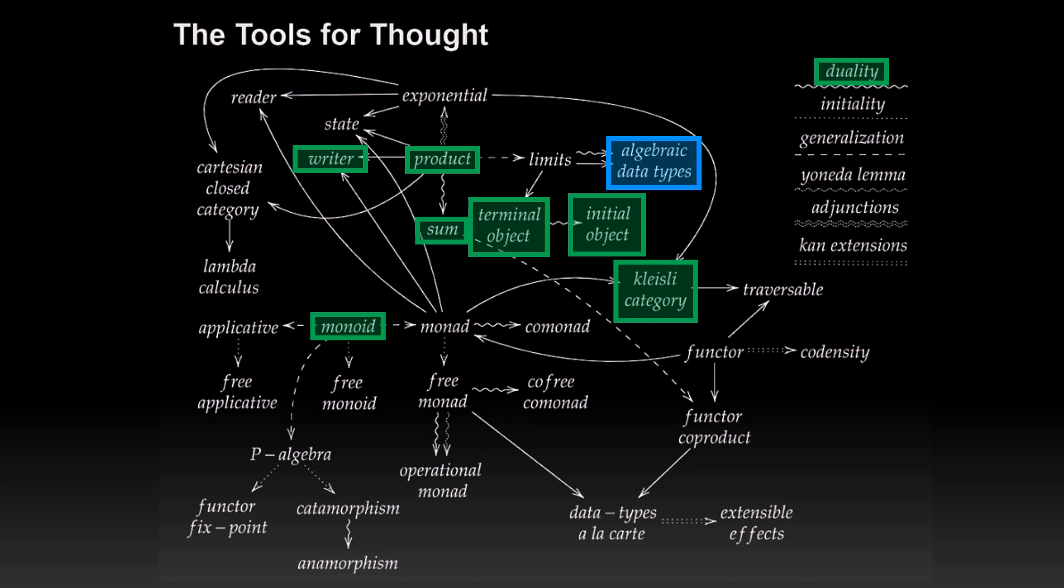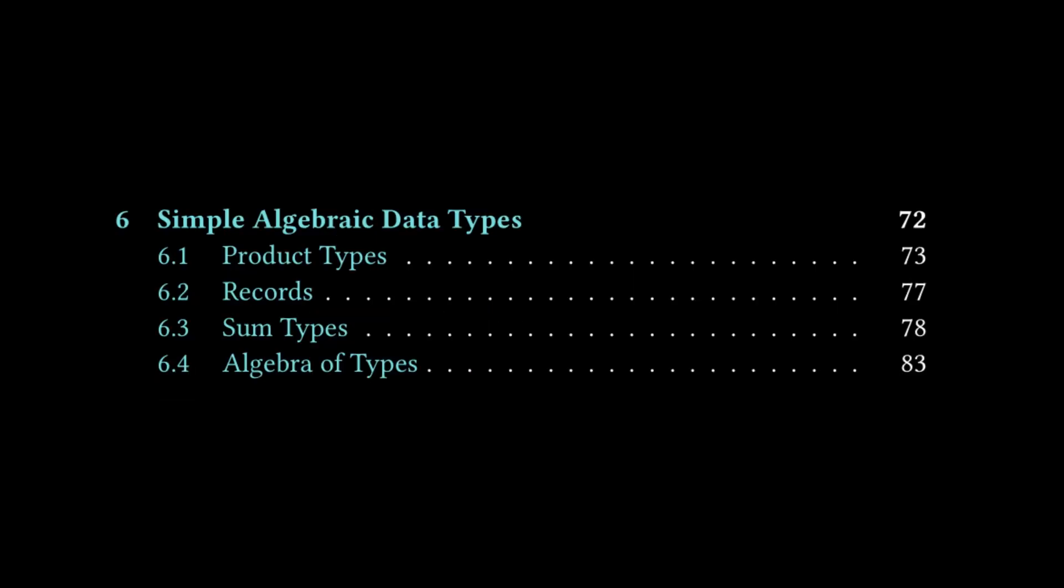And in Chapter 6, we're going to be covering Algebraic Data Types. So taking a look at the table of contents, there are four subsections excluding the Challenges section: Product Types, Records, Sum Types, and Algebra of Types. So let's hop into Product Types.